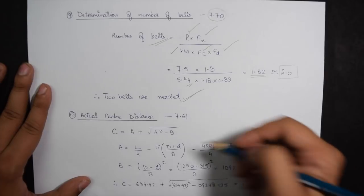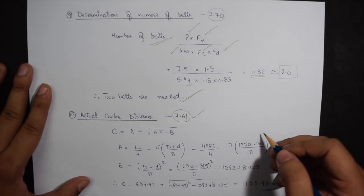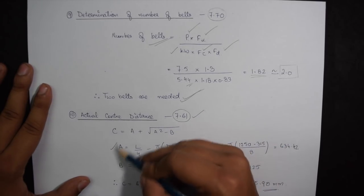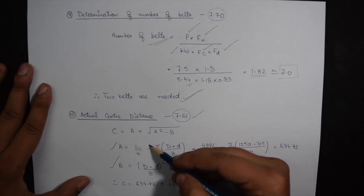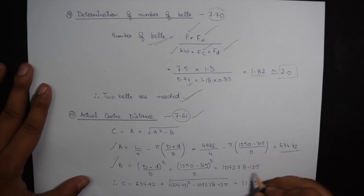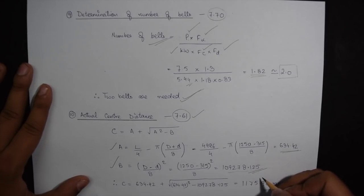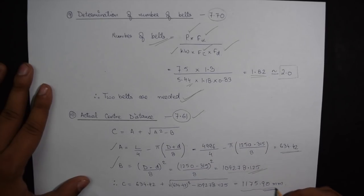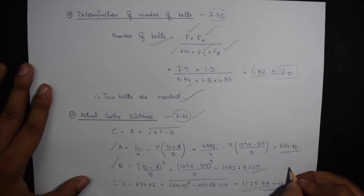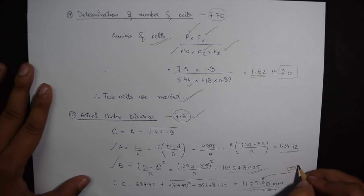Now the last step is calculating the actual center distance given on page number 7.61. The formula has two unknowns A and B which can be calculated by the formulas given over there. So the value of A comes out to be 634.42 and the value of B comes out to be 1.9278.125. So finally the value of C is 1175.90 mm. The original center distance given in the question was 1000 mm but from the values which we took and the values which we assumed the center distance comes out to be 117.90 mm.